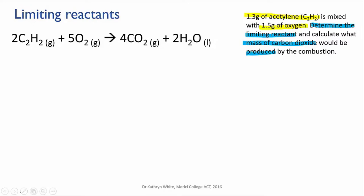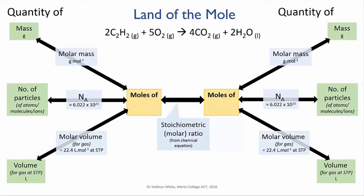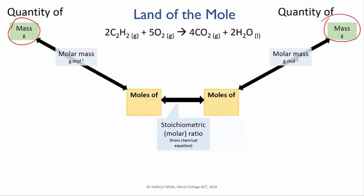This is a multi-part calculation. The first thing to do is to sort out what steps are going to be needed. You're given masses of reactants and you're asked to calculate a mass of product so you're going to have to use the land of the mole. But I'm going to modify it a bit. Since we're going from mass of reactant to mass of product I'll take off the particle and volume calculations because we don't need those.